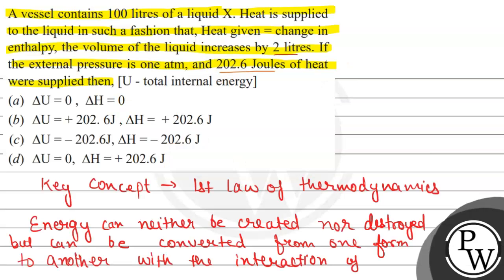Let us see what the given options are. Option D is the correct answer of this question: delta U equals zero, delta H equals plus 202.6 joules. Options A, B and C are incorrect. Hope you understood it well, best of luck.